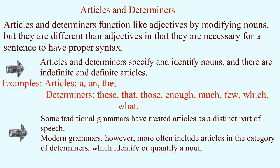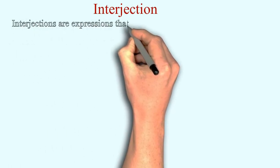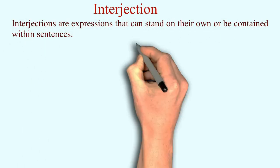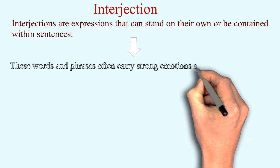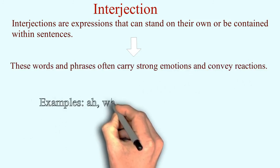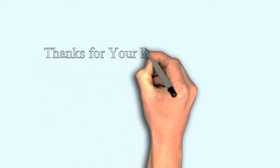In modern grammar, determiners have been grouped together with adjectives. Last, we have interjections. Interjections are used to show expressions and can be used independently or within a sentence. Examples include: hurray, oops, ouch, bravo — these are all examples of interjections.